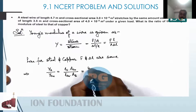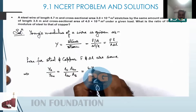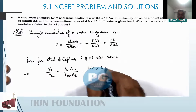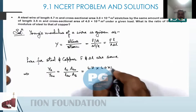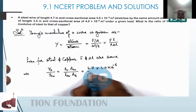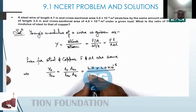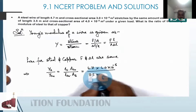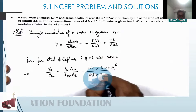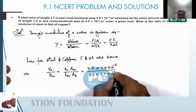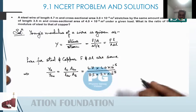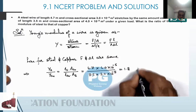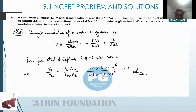Numerically substituting: the numerator is 4.7 multiplied by 4.0×10⁻⁵, and the denominator is 3.5 multiplied by 3.0×10⁻⁵. Solving this numerically gives us a value of 1.8. That is the result of this exercise.